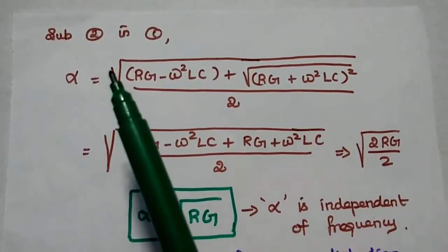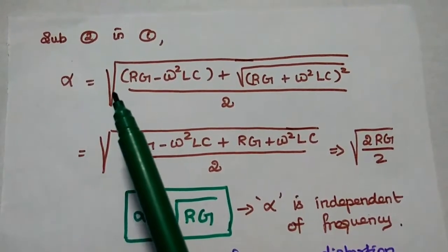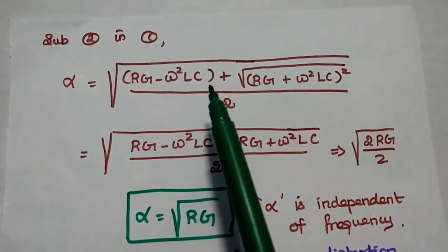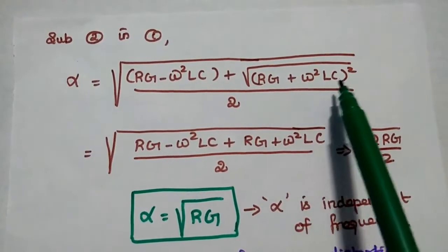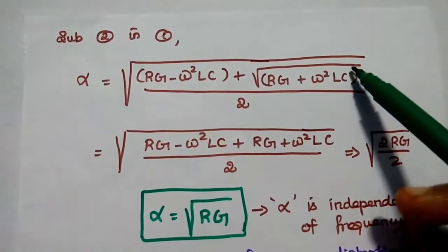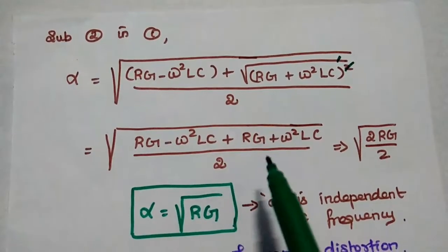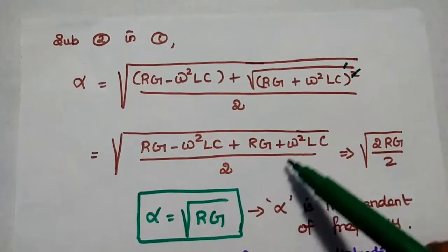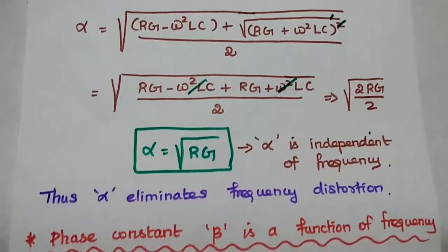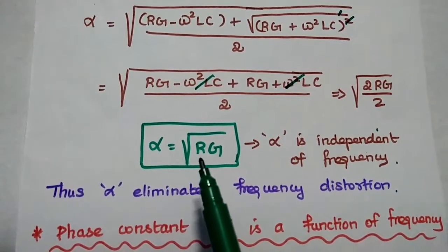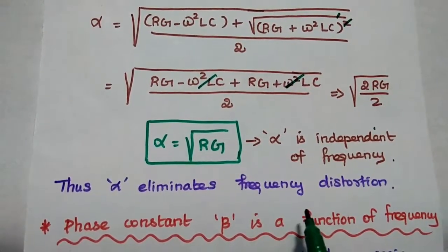Next we substitute the second equation into the first equation — the general expression of attenuation constant alpha, equal to the square root of rg minus omega squared lc, plus the square root of the second expression rg plus omega squared lc, whole square, divided by 2. The square root and square cancel each other, giving us the square root of rg minus omega squared lc plus rg plus omega squared lc, divided by 2. Cancelling the two middle terms, we get 2rg by 2, that is square root of rg. So attenuation constant alpha equals square root of R into G, which is independent of frequency. By this way, we eliminate frequency distortion.